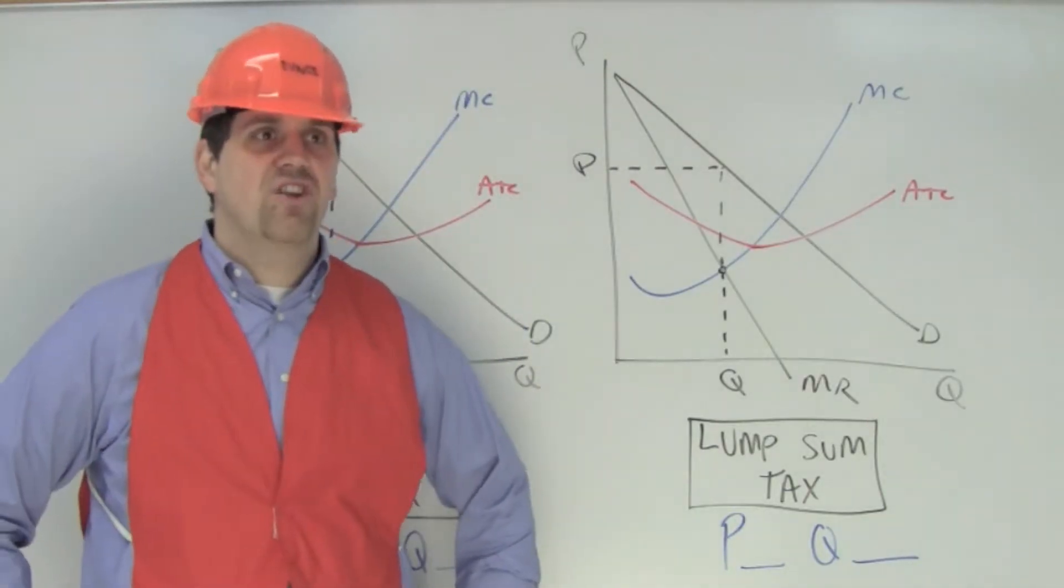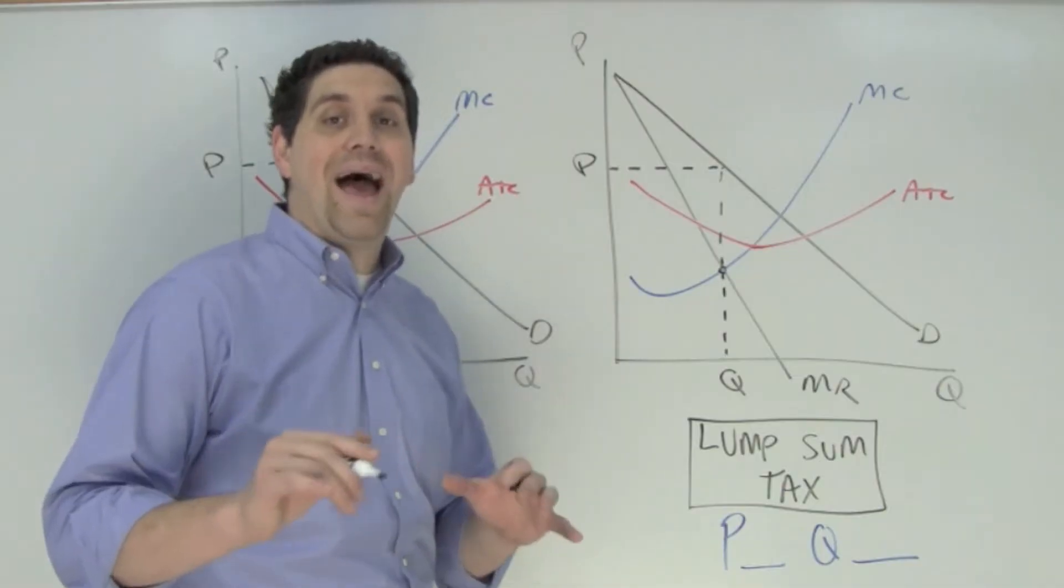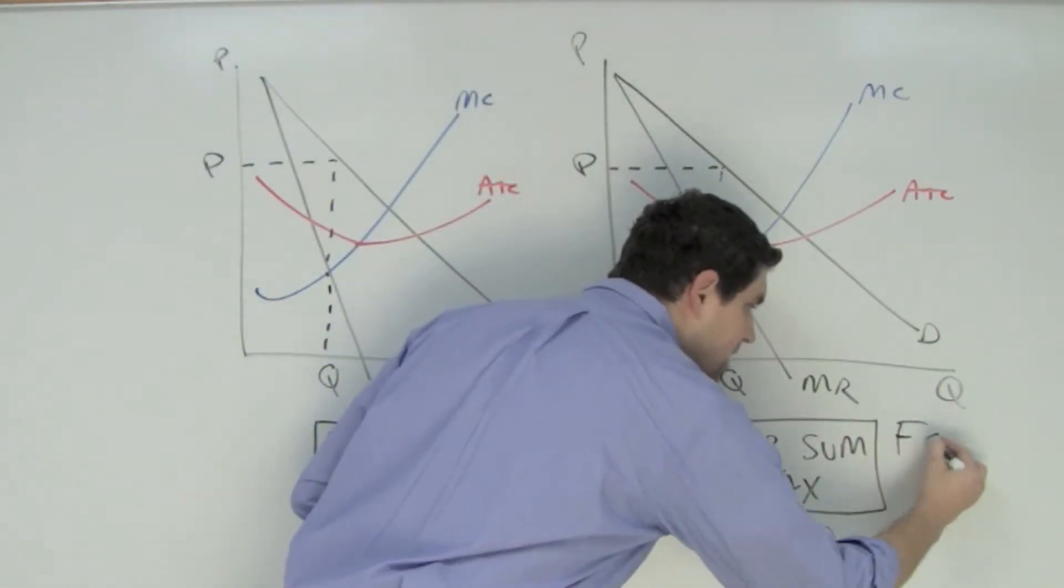Now listen up, you're going to have to pay a $5,000 one-time fee. A one-time lump sum tax is going to change a firm's fixed costs.